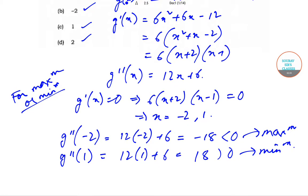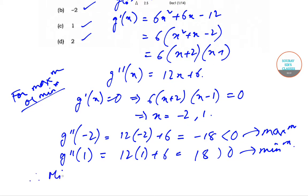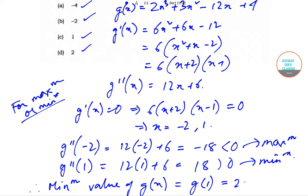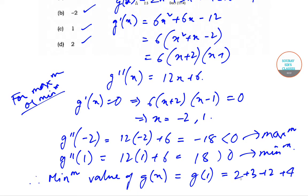So minimum value of g(x) is equal to g(1). The g(1) is given by 2 + 3 - 12 + 4, so we will get 2 + 3... 5 minus 12 is -7, -7 plus 4 will give us -3.